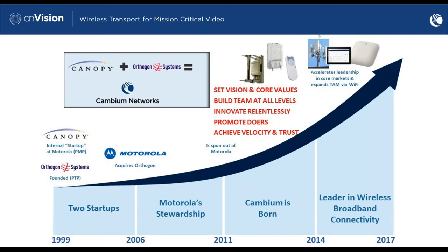The core heritage of Cambium Networks continues from the days of Canopy — we do wireless and we do it well. That innovation, reliability, and determinism in our protocols is what we packaged up under something called CN Vision, which we're presenting as a purpose-built video surveillance backhaul solution. Simply put, for outdoor cameras where fiber or copper isn't easily available, we offer our wireless solution as that purpose-built platform.